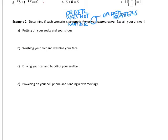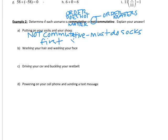For example number two, we have to determine if each scenario is commutative — where order does not matter — or not commutative — where order does matter. Part A says putting on your socks and your shoes. If you have to put on both, does the order matter? Of course you have to put your socks on before your shoes. So we would say this is not commutative — order matters here.